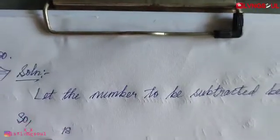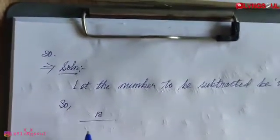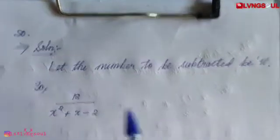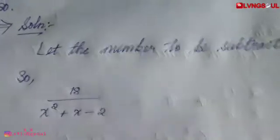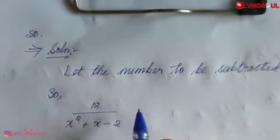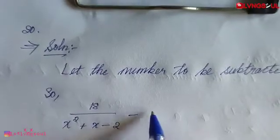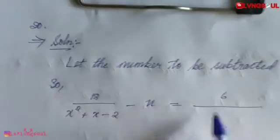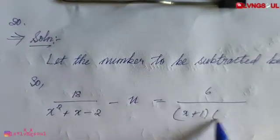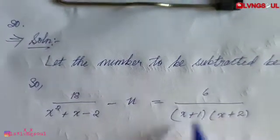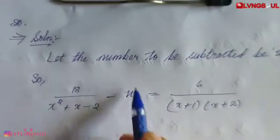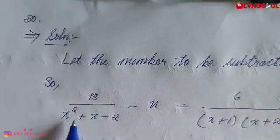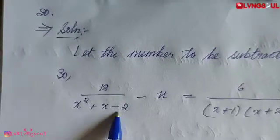So we have 18 by x squared plus x minus 2, and we want to get 6 by x plus 1 into x plus 2. We write: 18 by x squared plus x minus 2 minus U equals 6 by x plus 1 into x plus 2.